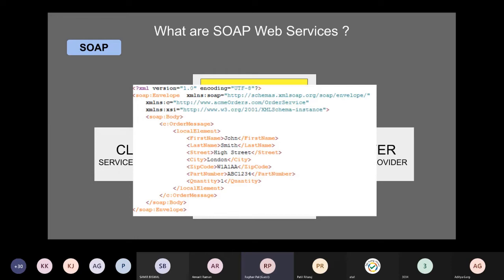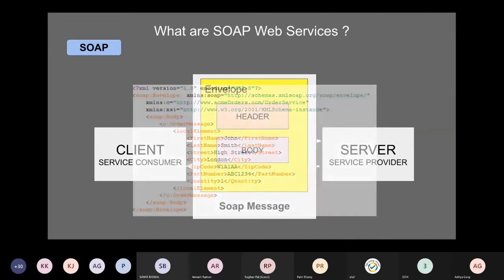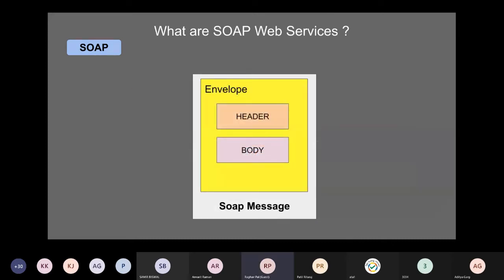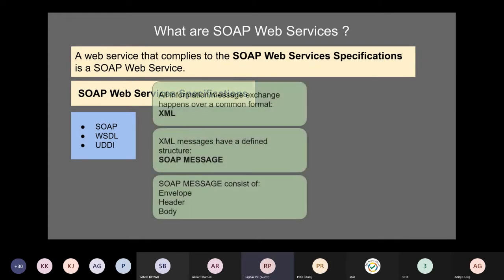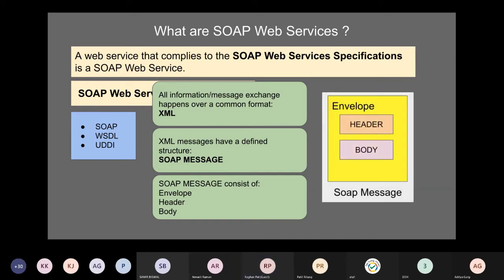This is how a SOAP message looks — and this is how communication happens over a SOAP API. We have a request where we can give all our parameters, like first name, last name, city, etc., to create an employee or a user with all those details. For a SOAP web service, all communication happens in this defined XML format called a SOAP message, with an envelope, header, and body.